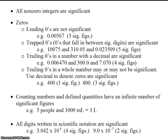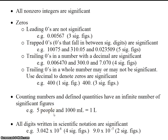Counting numbers, like 5 people, and defined quantities — like definitions, such as 1,000 milliliters equals 1 liter — have an infinite number of significant figures. If you counted 5 people in the room, you could write 5.000000 indefinitely, because that's exactly how many people there are. There isn't any room for error or estimation — it's exactly 5 people. So that would have an infinite number of sig figs. This also has an infinite number of sig figs.